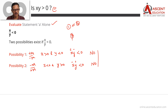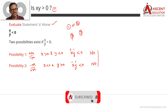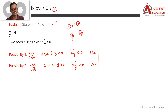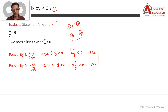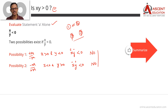Answer option 2 means B alone is sufficient and A is not sufficient — but since A is sufficient, option 2 is eliminated. Answer option 3 requires both statements together — but since A alone is already sufficient, option 3 is also eliminated. We narrow down to 1 or 4. Let's evaluate Statement B to decide.